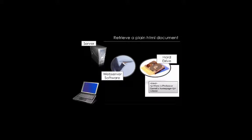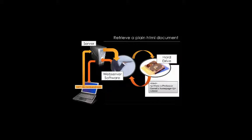Let me show you how this works. We have the end-client laptop computer issuing a request, which goes through the internet to a server. On the server there's web server software — something like Apache or IIS on the Microsoft platform. That software then looks at the request, goes to the hard drive, finds the file, and returns it to the end user. That's the basic process.